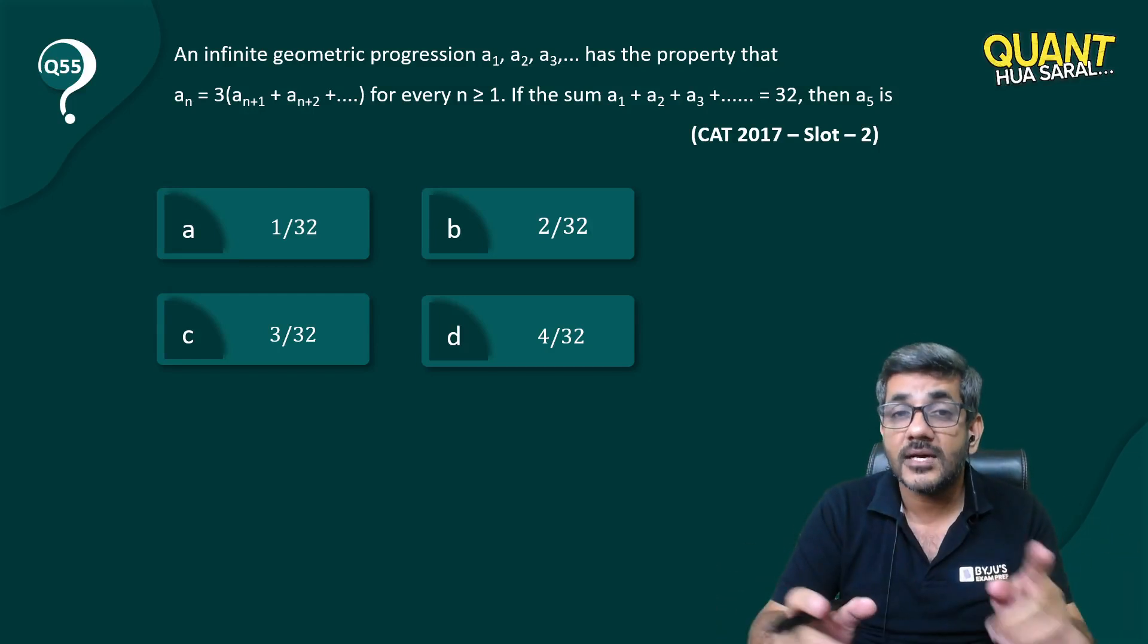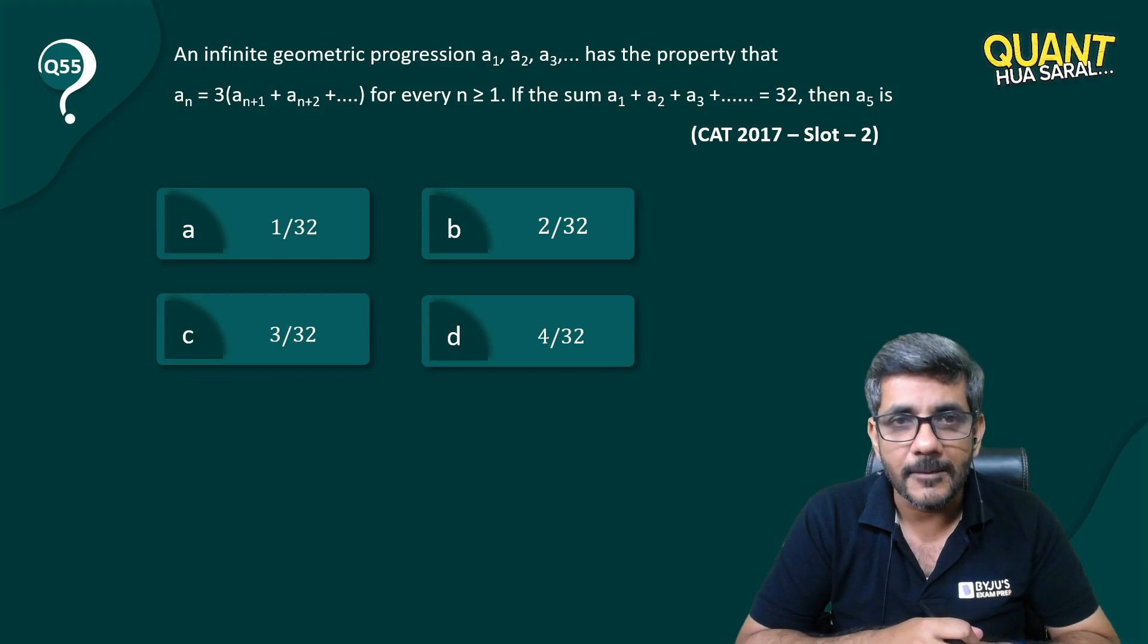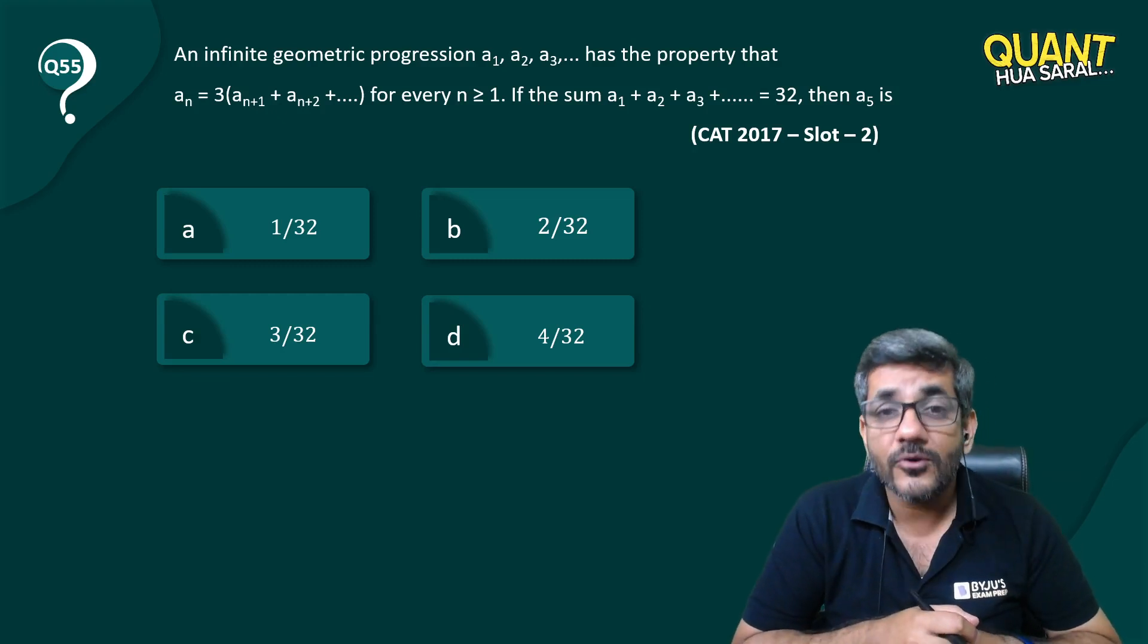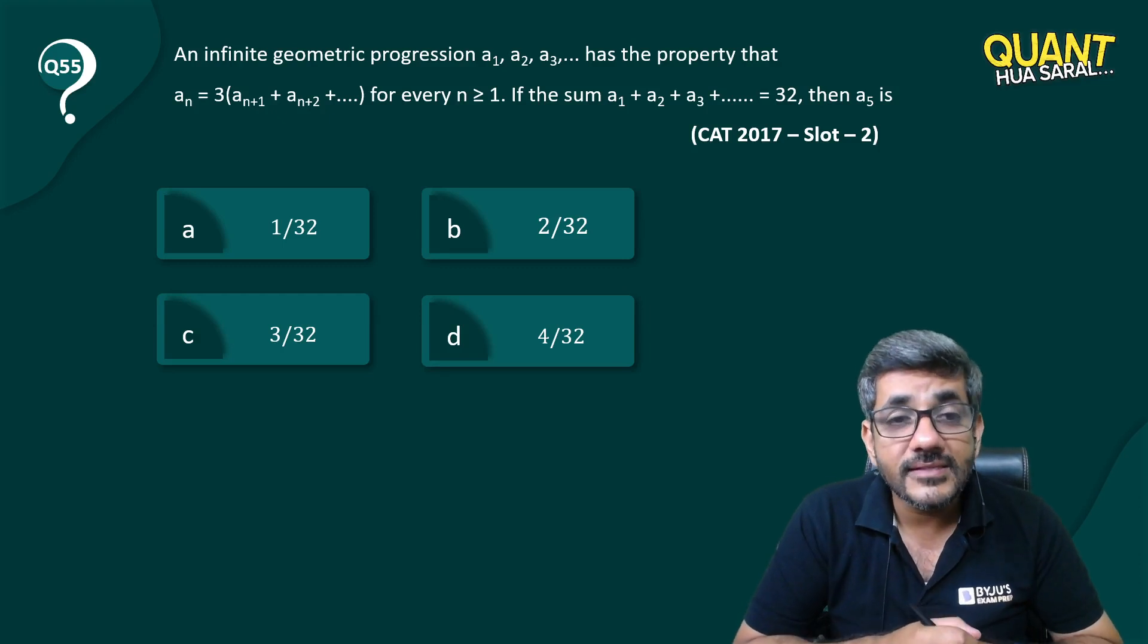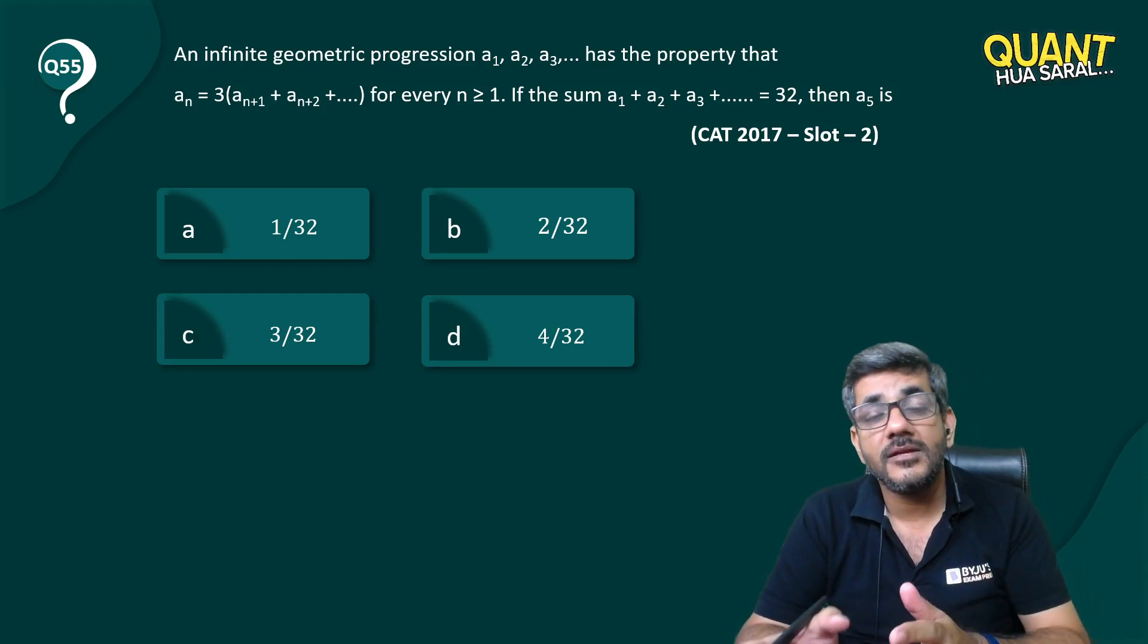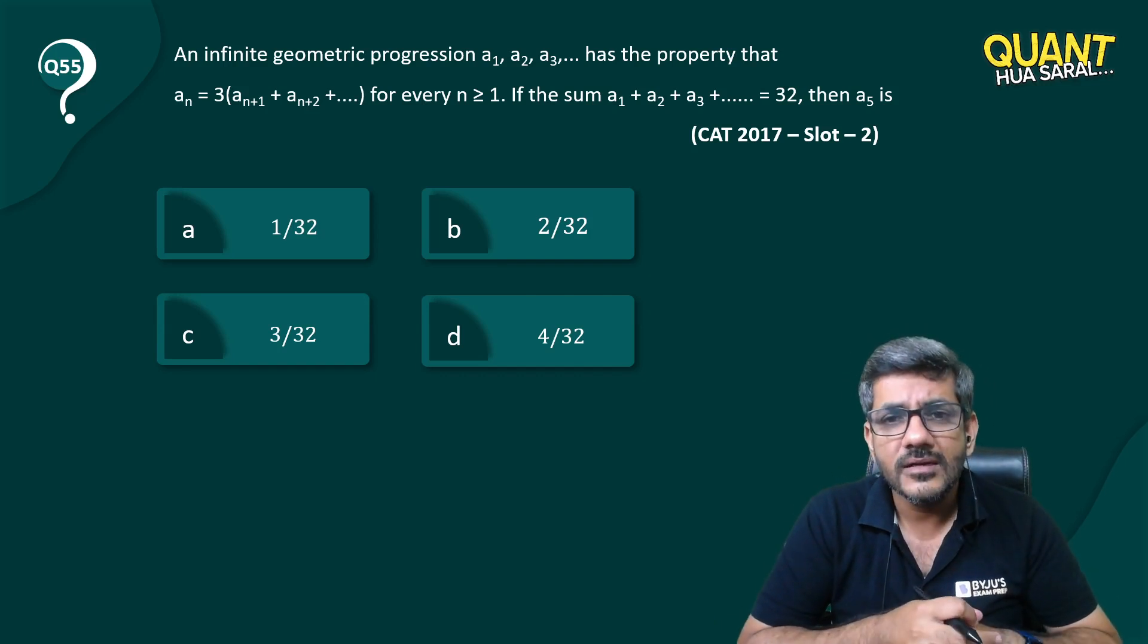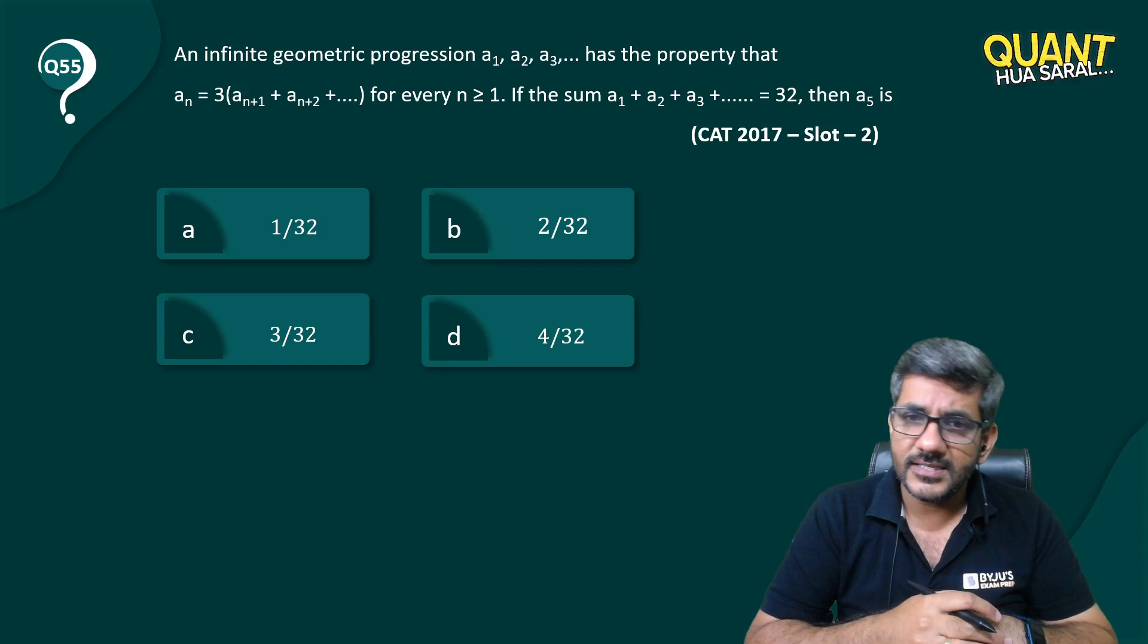Let's start with this question. An infinite geometric progression has the property that a_n is equal to three times of a_(n+1) + a_(n+2) and so on and so forth for every n ≥ 1. If the sum of the series is 32, then what is a_5?